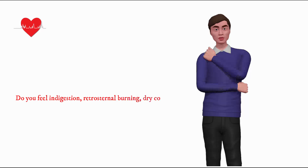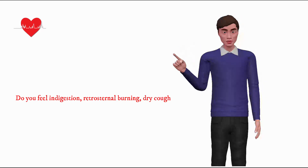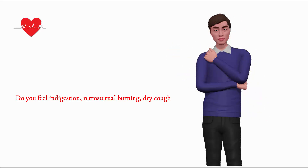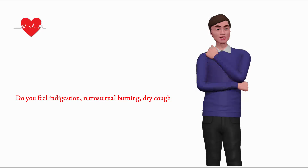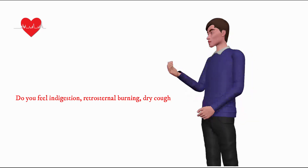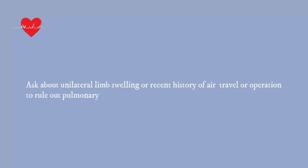Next, ask questions to rule out gastrointestinal causes of chest pain. Do you feel indigestion, retrosternal burning, or dry cough along with chest pain, to rule out gastroesophageal reflux disease? While taking history of chest pain, it is also important to ask about unilateral limb swelling or a recent history of air travel or operation, to rule out pulmonary embolism.